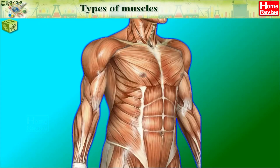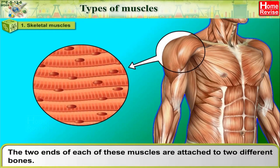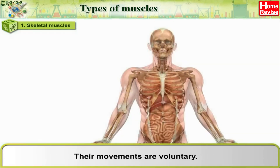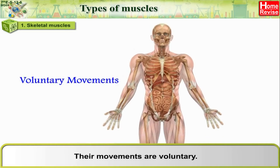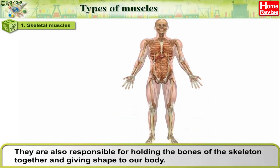Types of muscles: 1. Skeletal Muscles — the two ends of each of these muscles are attached to two different bones. Examples are the muscles of the arms and legs. Their movements are voluntary. They are also responsible for holding the bones of the skeleton together and giving shape to our body.